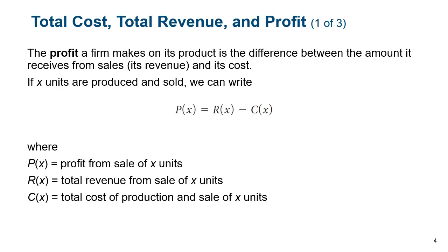Let's start with total cost, total revenue, and profit. Profit is simply revenue minus cost — it's that simple. So if you're looking for a profit function and you're given a revenue function and a cost function, all you have to do is subtract the cost function from the revenue function. If you remember how to subtract one function from another, it's really just basic algebra.